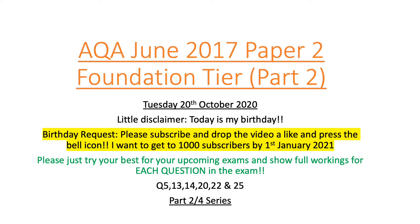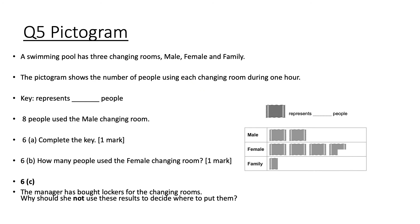Right, let's get to the video. Question 6 involves a pictogram. The key represents 8 people using the mail, so each symbol represents 4 people — that's one mark. Part B asks how many people use the female changing room: 4, 8, 12 — that's three full symbols — plus three quarters of a symbol, giving 12 + 3 = 15 people.